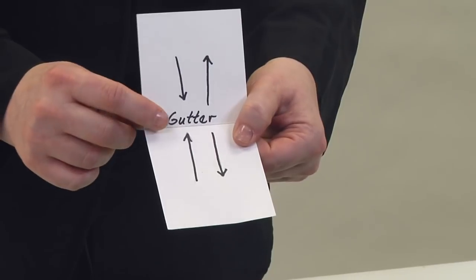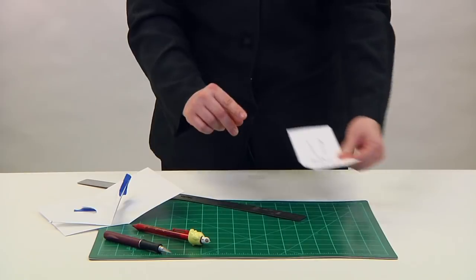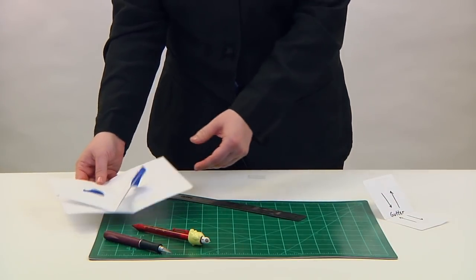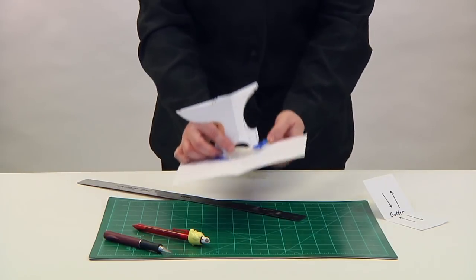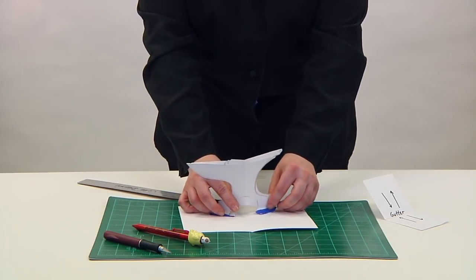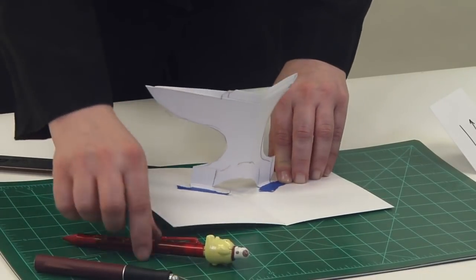To take advantage of this together-then-apart motion, paper engineers will normally place the main mechanism over the centerfold, also known as the gutter. Like a bridge, one part of the mechanism will be on one side of the gutter and then span over to the other side.